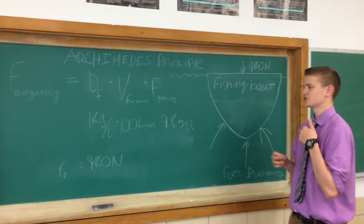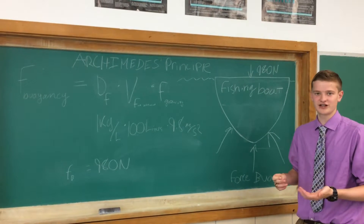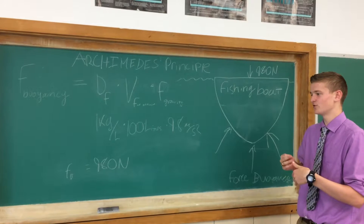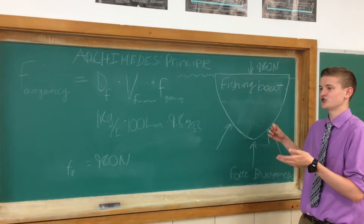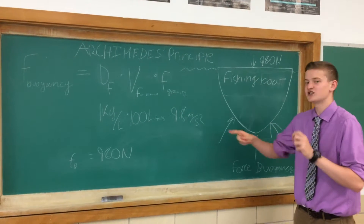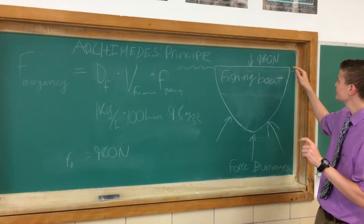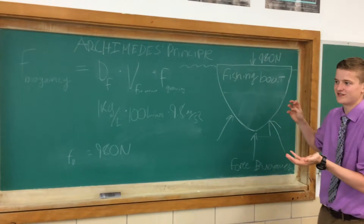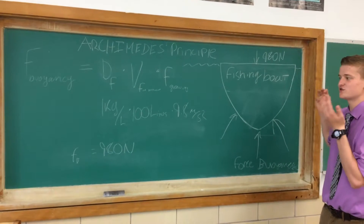Let's take this equation and apply it to a real-life example. In western New York there are the Finger Lakes and the Great Lakes — there's a lot of fishing. So let's take a small fishing boat whose mass is 100 kilograms. The weight — mass times gravity at 9.8 meters per second squared — is equal to 980 newtons, meaning it's being pushed down into the water with that large force.